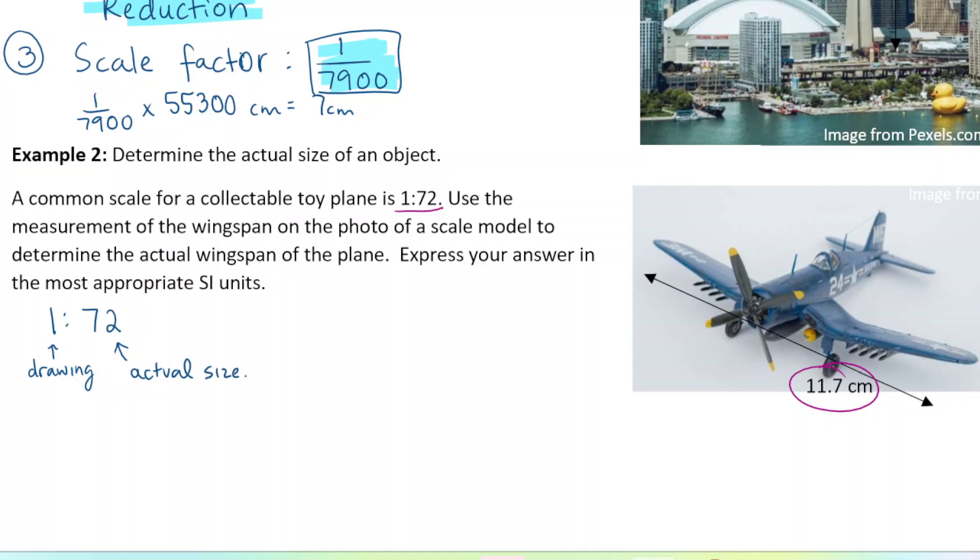So what we want to do here is take the 11.7 centimeters and multiply it by 72 to get the actual size of the plane, because the plane is 72 times larger than the drawing. When we do that, we get 842.4 centimeters. That's not really appropriate - it's probably better to change it to meters. So we're going to change this 842.4 centimeters into meters. Remember that we always want to cancel out the units we're changing from and have the units we're changing to in the numerator. So we have one meter is 100 centimeters, so it would be 8.424 meters is the actual wingspan.